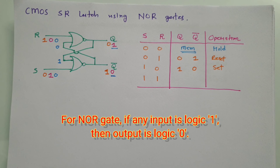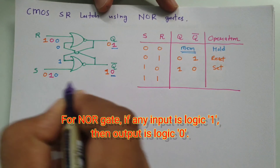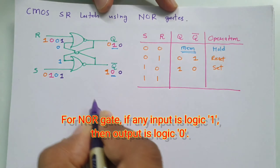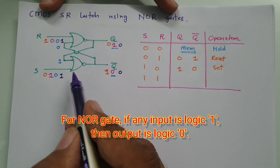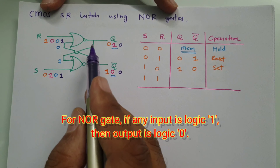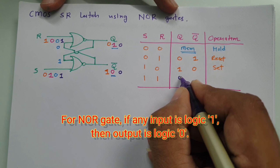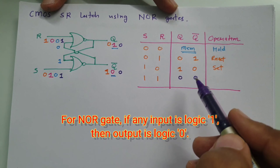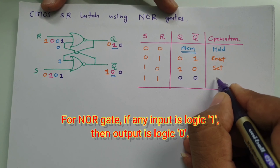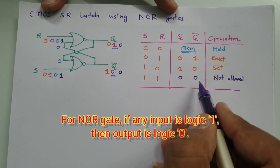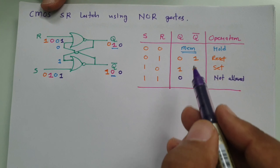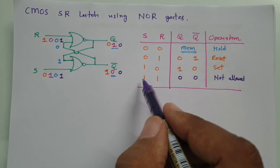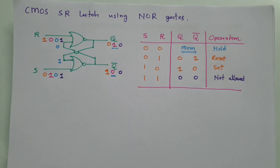Now the fourth case: S=1 and R=1. Since any input of 1 drives a NOR gate output to 0, both NOR gate outputs become 0. This means Q=0 and Q-bar=0. However, Q and Q-bar should be complements of each other — they must have opposite polarity. Since both are 0 here, this condition is not allowed. Therefore S=1, R=1 is not used in SR Latch using NOR gate.